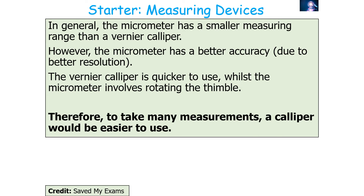Therefore, to take many measurements quickly, a calliper may be easier to use. However, if you want higher accuracy, a screw gauge micrometer is the preferred device.